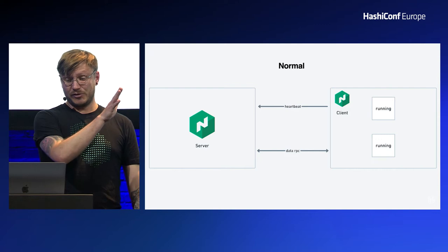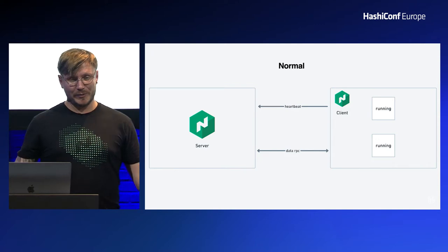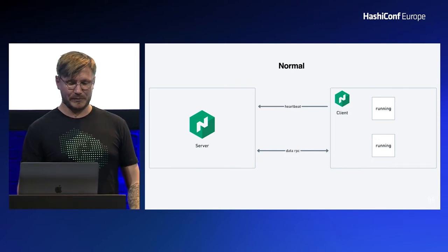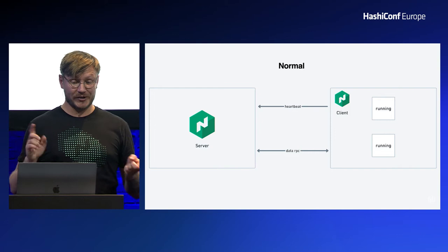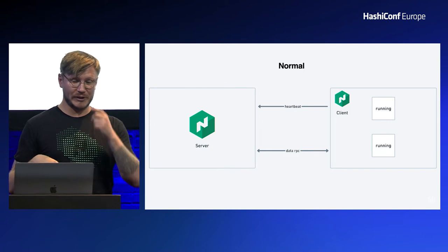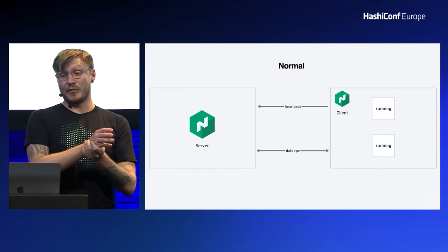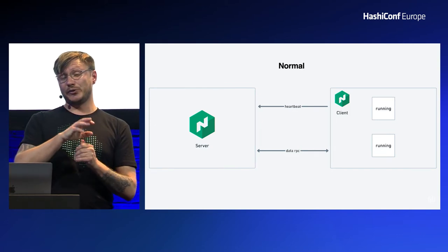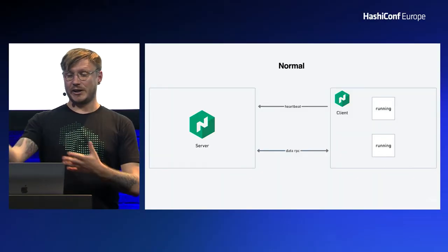Work is shared via a separate data RPC — a bi-directional communication between server and client. The server might tell the client to run or stop a piece of work. The client might tell the server it started a piece of work and it's running fine, or that a piece of work failed and needs to be placed somewhere else.